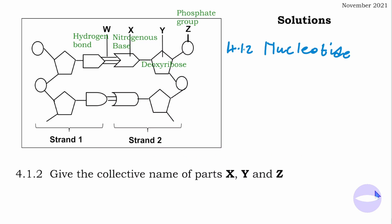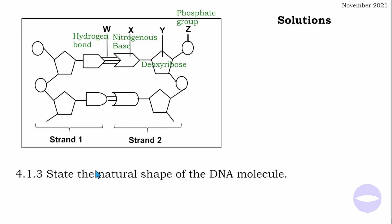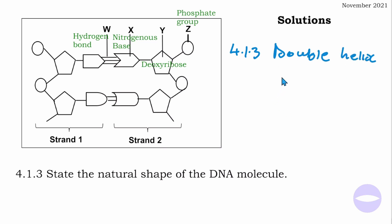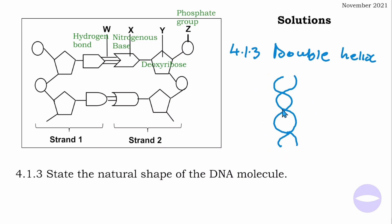Question 4.1.3: state the natural shape of the DNA molecule. The natural shape of a DNA molecule is the double helix. By double helix we mean one strand is helical and the other strand is also helical. DNA spends most of its time in this shape, which is why we say the natural shape of DNA is double helix.